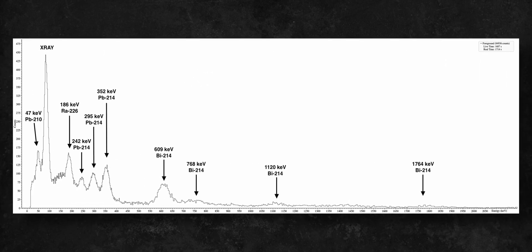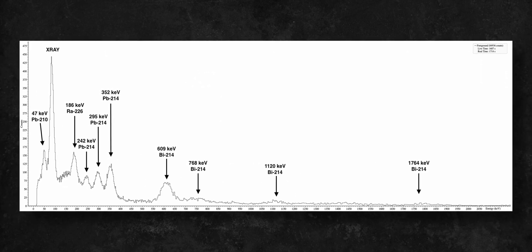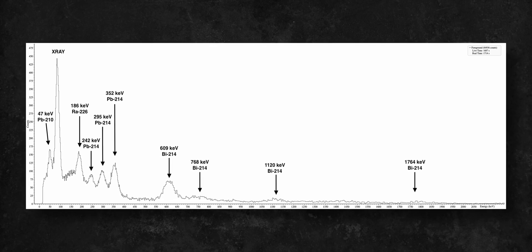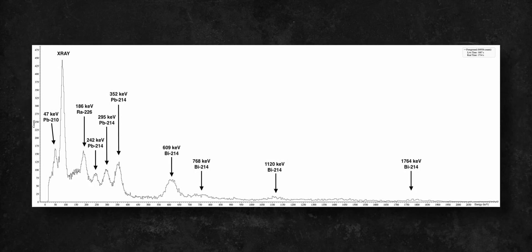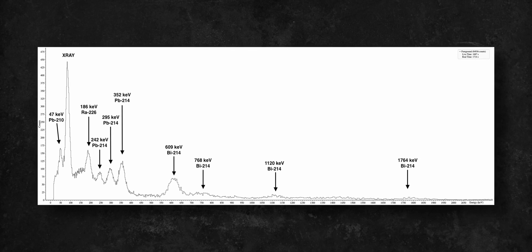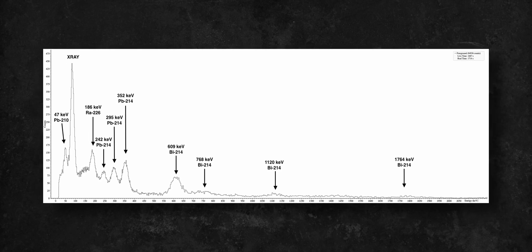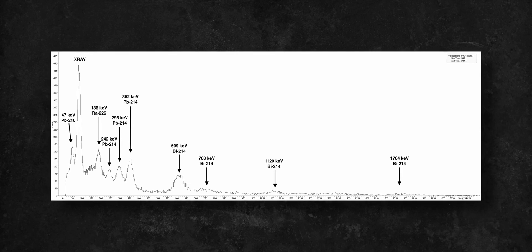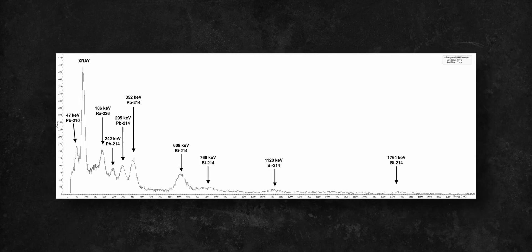For comparison, here is a spectrum of pure radium-226 from an old radium-painted watch. While similar, the peak from uranium-235 at 144 keV is clearly missing, which is a distinctive feature between natural uranium and radium spectra.